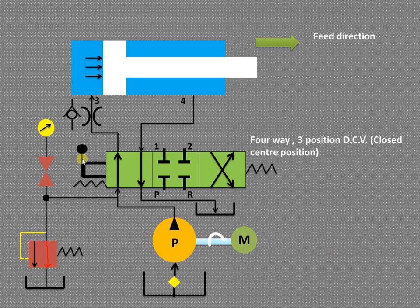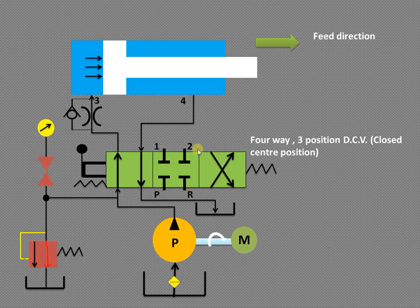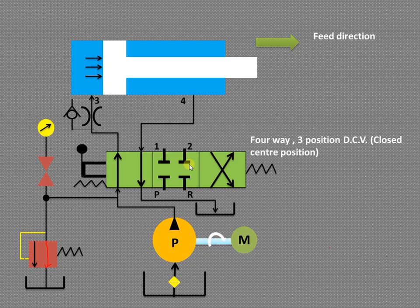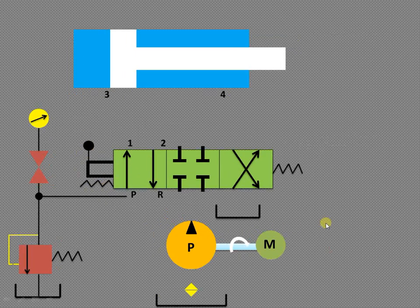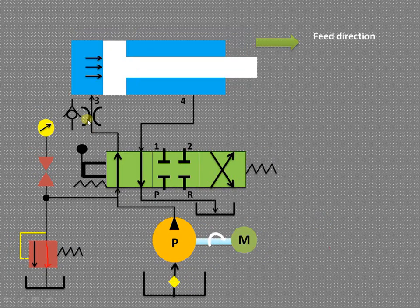From port 2 the fluid goes to R and then back to the receiver. When we release or operate the lever to get the right envelope mode, P and R and ports 1 and 2 shift accordingly. This is the four-way three-position directional control valve: three positions being the center block position, left envelope mode, and right envelope mode — lever-operated and spring-controlled.